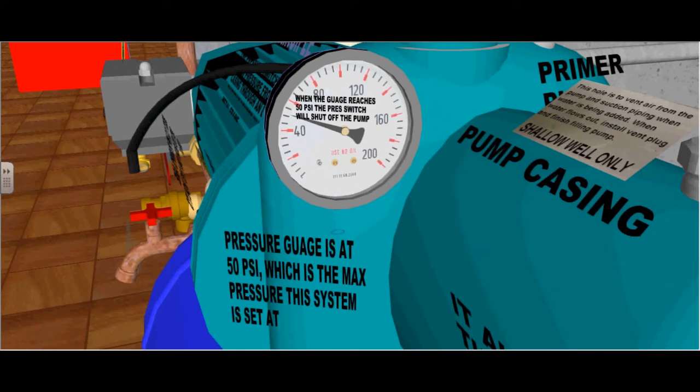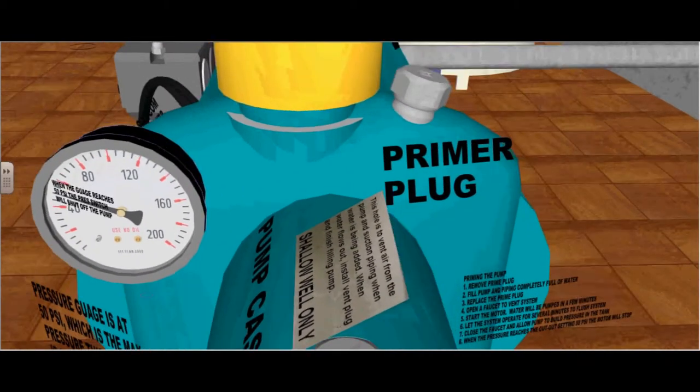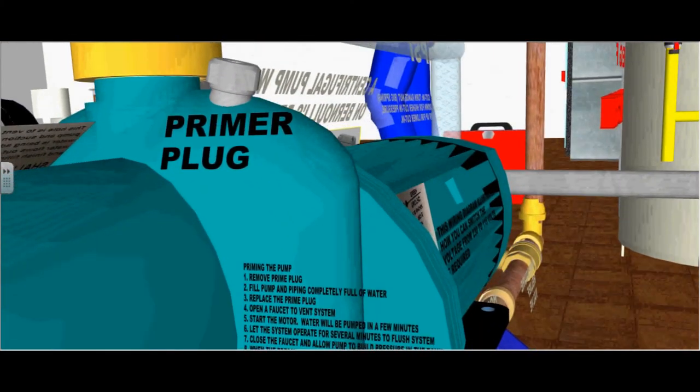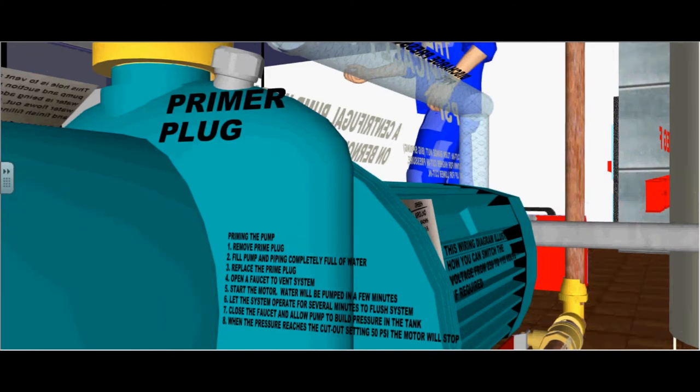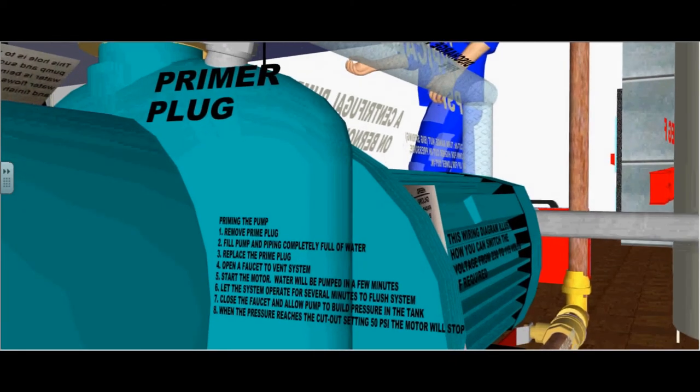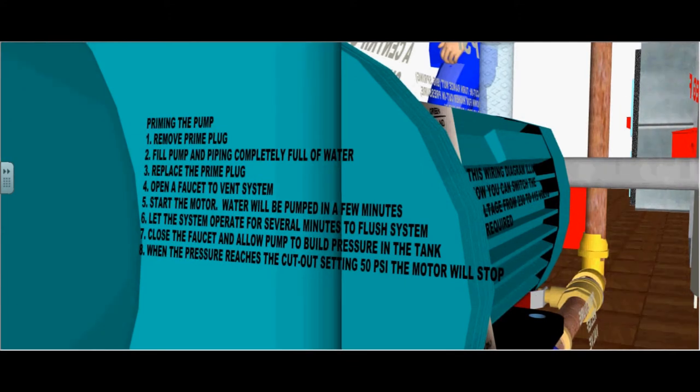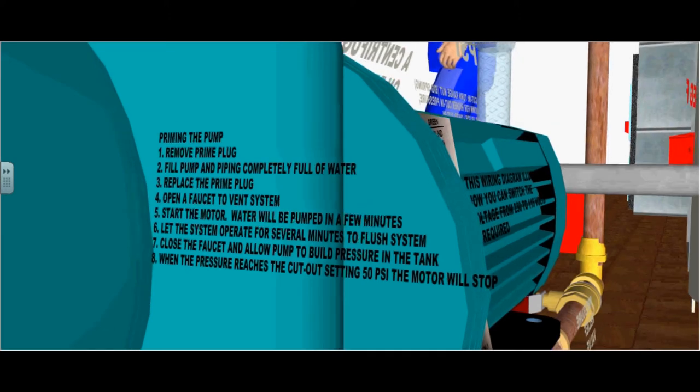The pressure gauge is set at 50 psi, which is the maximum pressure this system is set at. Here is the prime plug. To prime your pump on new installation, you remove the prime plug. You fill the pump and pipe completely full of water. Replace the prime plug. Open a faucet to vent the system. Start the motor. Water will be pumped in a few minutes. Let the system operate for several minutes to flush the system.